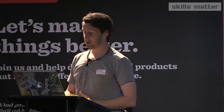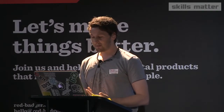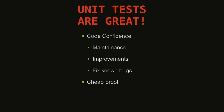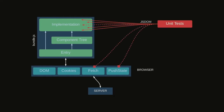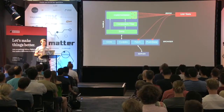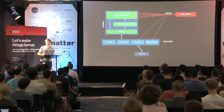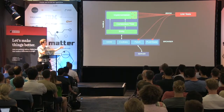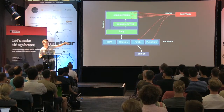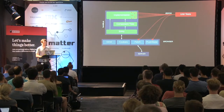So where do unit tests fit in? Unit tests are great — no question about it. They give confidence in your code, they're really useful for maintenance, improvements, and fixing known bugs. They're like cheap proof — they're fast, you can get a lot done quickly. In this architecture, unit tests sit in the implementation layer, where you're grabbing your implementation and asserting on bits of it, using stubbing and spying. Sometimes you use JSDOM instead of a real browser to replicate that browser scenario and go a little bit faster.